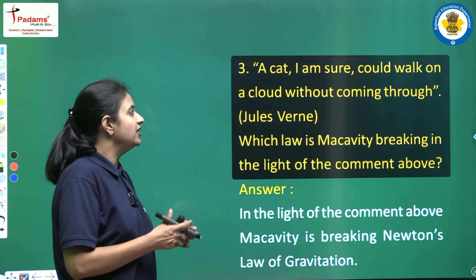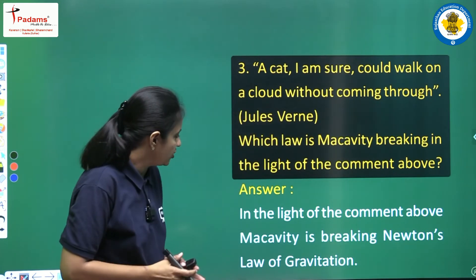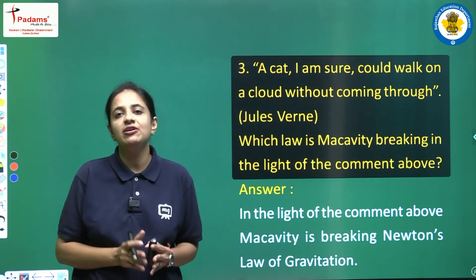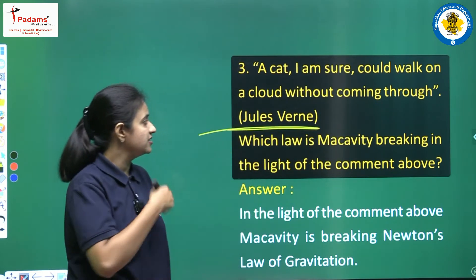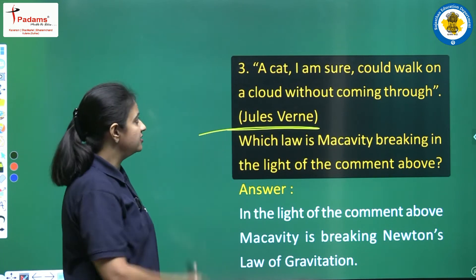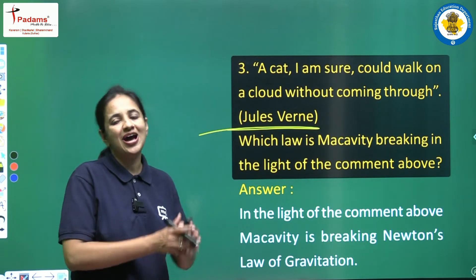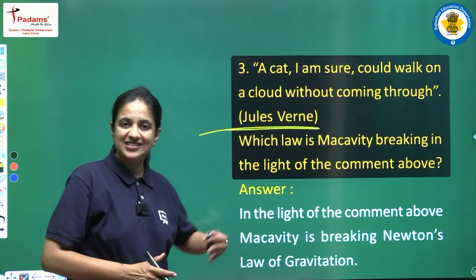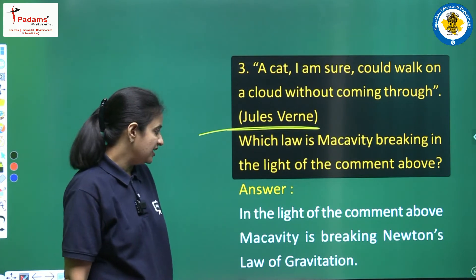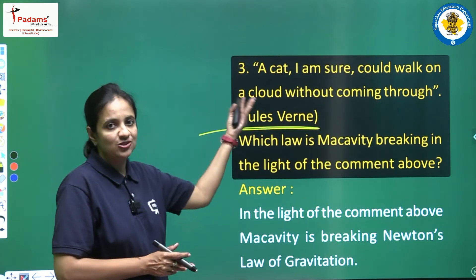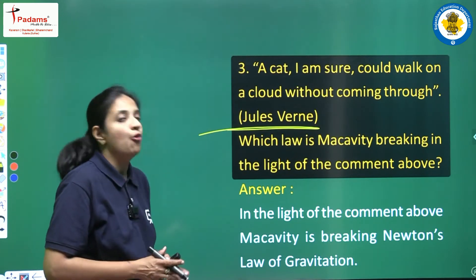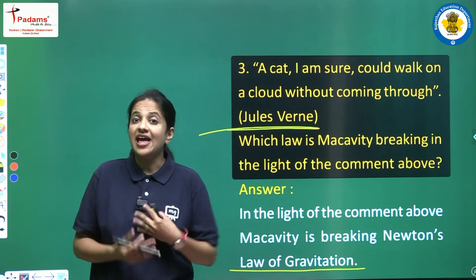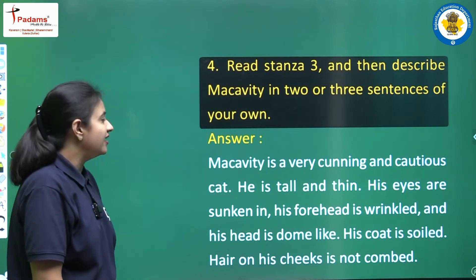Question 3: Jules Verne wrote, 'A cat, I am sure, could walk on a cloud without coming through.' Which law is Macavity breaking in the light of this comment? Answer: In the light of this comment, Macavity is breaking Newton's law of gravitation, because in the poem we read that Macavity is able to perform the art of levitation.